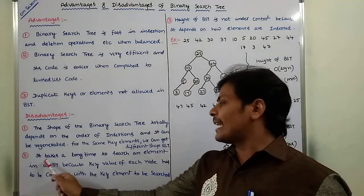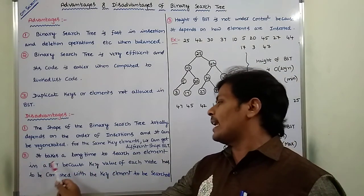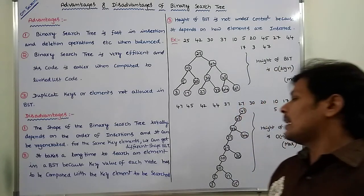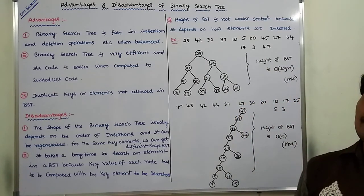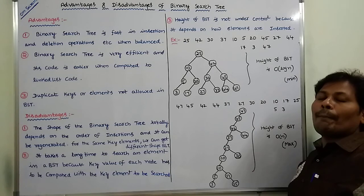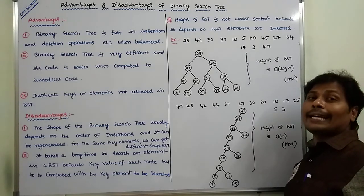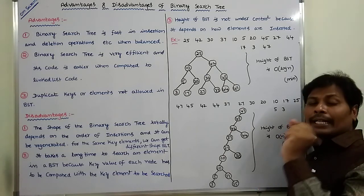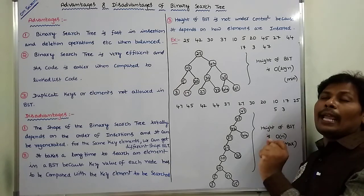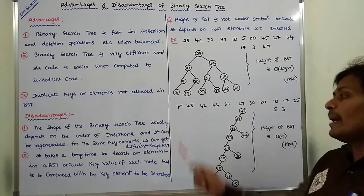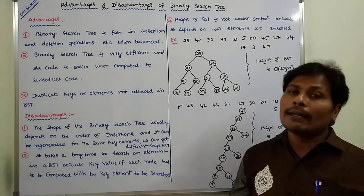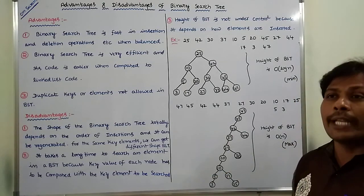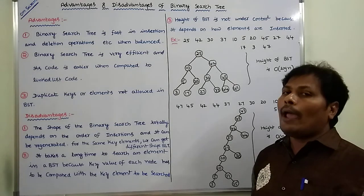Second point: it takes a long time to search an element in a BST because the key value of each node has to be compared with the key element to be searched. The searching operation can take more time because whatever key element we have to find is compared with elements either in the left subtree or in the right subtree, requiring more comparisons based on the position of the key element.